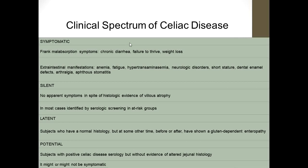Celiac disease is a spectrum — what we see in the outpatient department is actually the tip of the iceberg. There are many silent cases with no apparent symptoms despite histological evidence of villous atrophy; these are identified through screening methods such as high-risk group screening, then confirmed serologically and histologically. Latent cases are subjects who have normal histology but at some other time have shown gluten-dependent enteropathy. Potential cases are subjects with positive celiac disease serology but without evidence of altered jejunal histology, who may or may not be symptomatic.